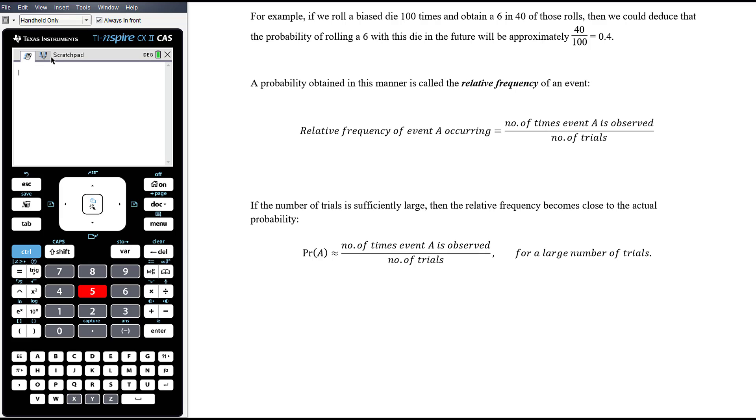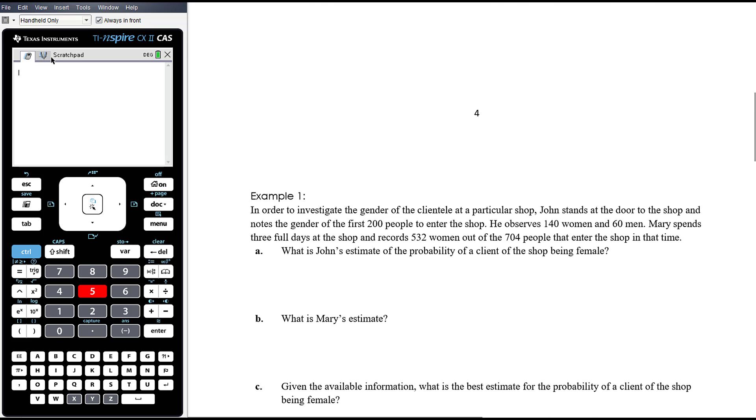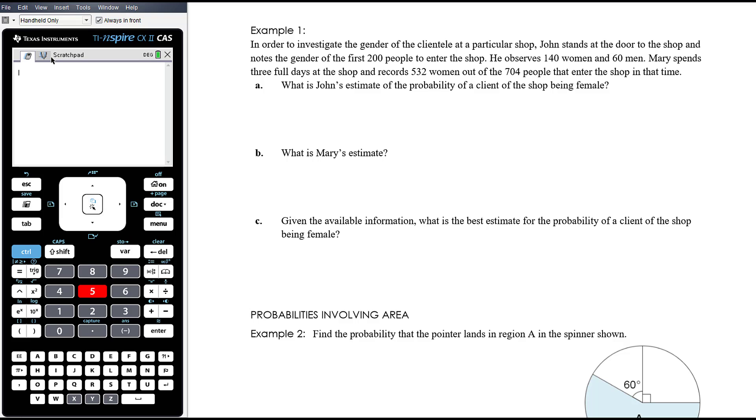Obviously if we were to roll the die 10,000 times, we could suggest that would be a pretty good estimate for the actual probability of rolling a 6 with this particular biased die. Let's work through some examples. In order to investigate the gender of the clientele at a particular shop, John stands at the door and notes the gender of the first 200 people to enter the shop. He observes 140 women and 60 men. Mary spends three full days at the shop and records 532 women out of 704 people that enter in that time.